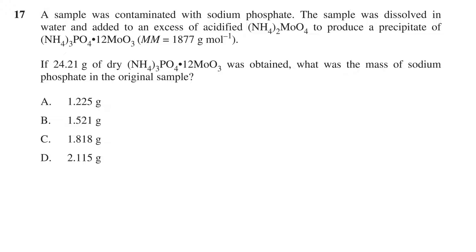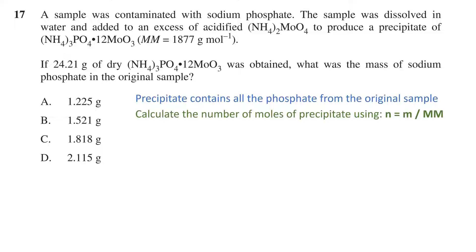To answer this question, we need to realize that the precipitate contains all the phosphate from the original sample. So, to calculate the number of moles of the precipitate, we use the formula n equals mass on molar mass. Based on the data in the question, this will be 24.21 grams divided by 1877 grams per mole, which gives us 0.01290 moles.